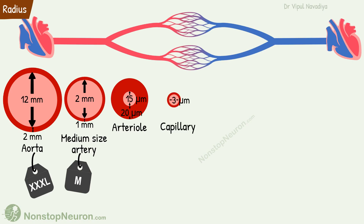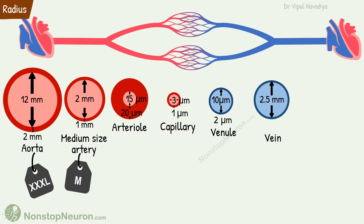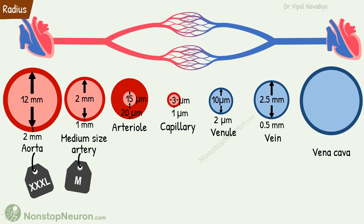Capillaries are 3 µm wide with only 1 µm thick wall. Venules are about 10 µm wide and 2 µm thick. Veins have an internal radius of 2.5 mm and a wall that is 0.5 mm thick. And finally, vena cava is very large with an internal radius of about 15 mm and wall thickness of about 1.5 mm. So these are the radii and wall thickness at the different levels of branching.